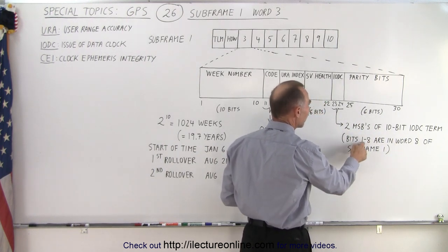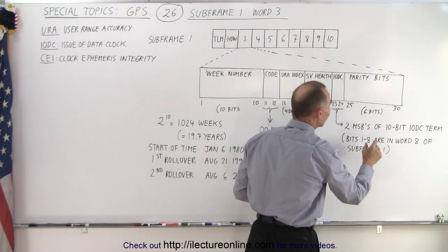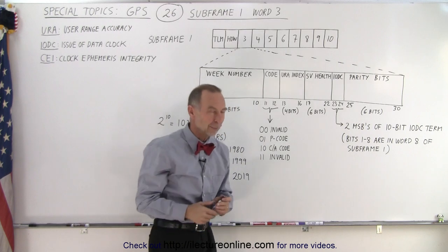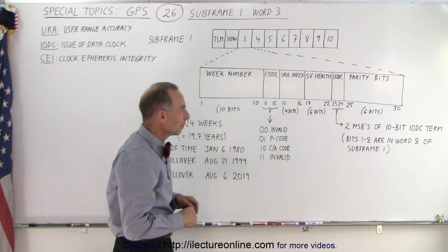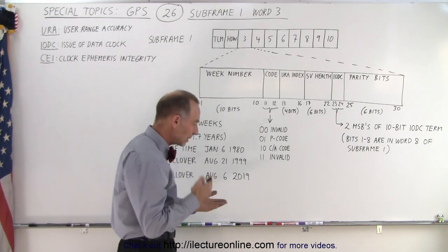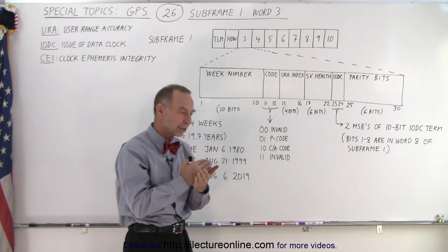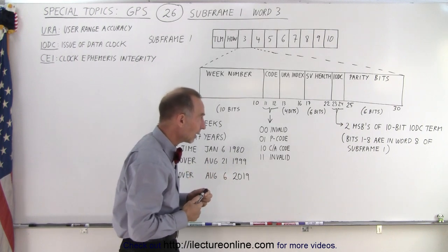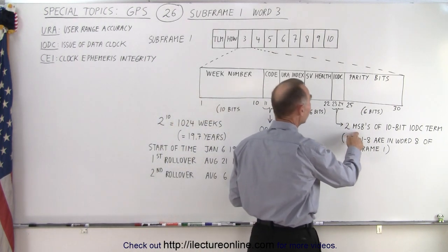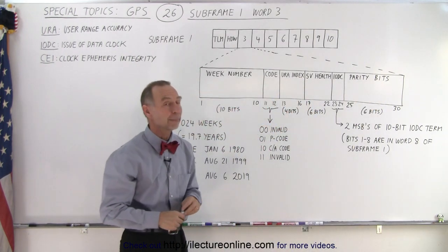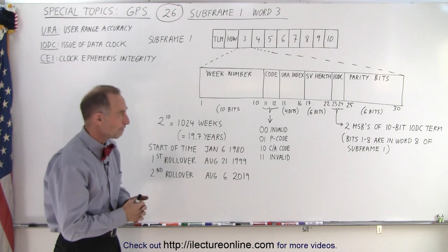The other 8 bits are in Word 8 of the same subframe. They're located over here and we'll get to that when we get to Word 8. But that at least gives you what we call the Issue of Data Clock. We need to know when that data clock was issued so we can reference the time and get a very accurate time measurement. Finally, the last six bits like it is for every word are the parity bits so we can do error checking.